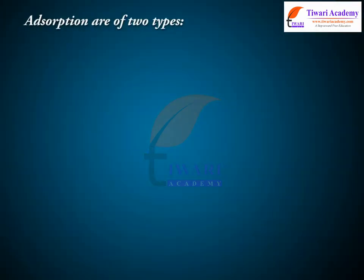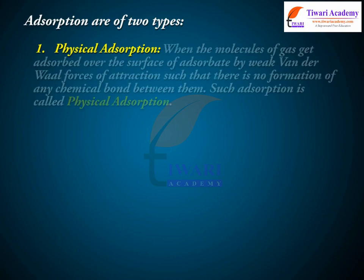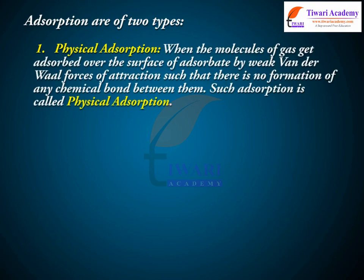Adsorption is of two types. Type 1: Physical adsorption. When the molecules of a gas get adsorbed over the surface of the adsorbate by weak van der Waals forces of attraction, such that there is no formation of any chemical bond between them, such adsorption is called physical adsorption.